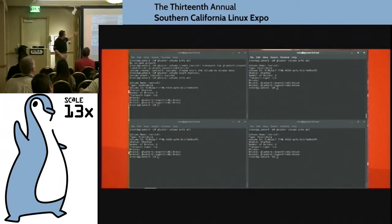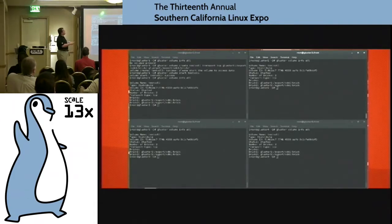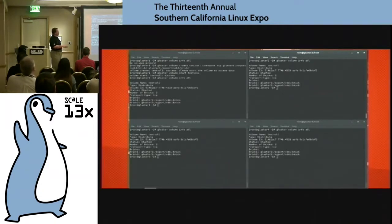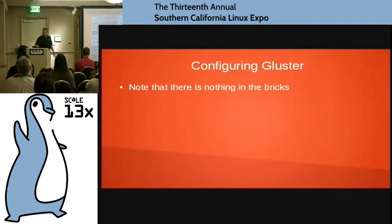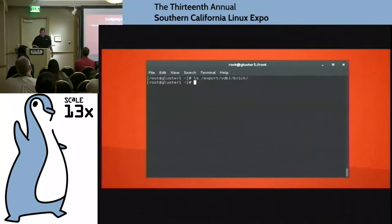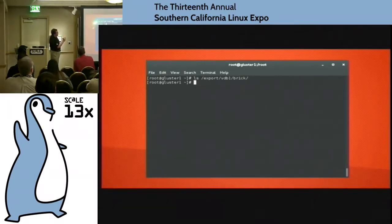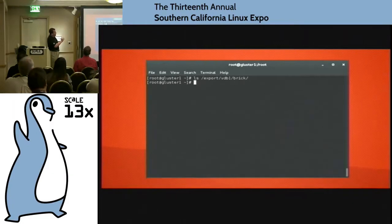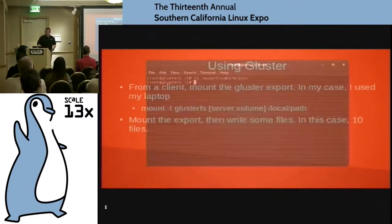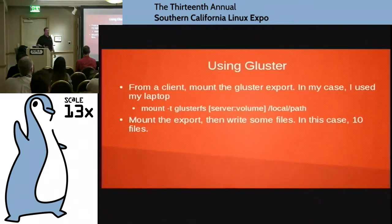So where was I? This is an example where I set up the volume over here and the other nodes already know about it. I don't have to do anything on them. Right now there's nothing in the bricks because I haven't written any files yet. If I do an LS on one of the Gluster nodes — that's on server Gluster1 — and go look at the actual path on the file system, there are no files there, which makes sense.